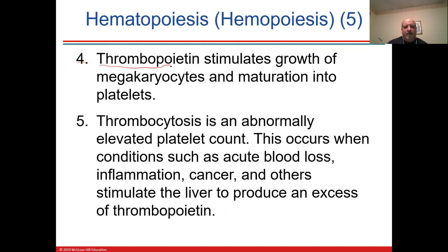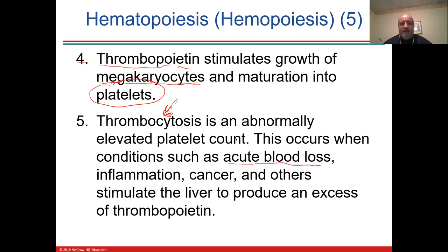Thrombopoietin relates to thrombocytes. Megakaryocytes have their own lineage — they mature, lose their nucleus, and explode into thrombocytes, which are platelets. Thrombocytosis means high platelets. If you have acute blood loss, your body reacts by making more platelets. Inflammation also increases your platelets, as can certain cancers like leukemia.